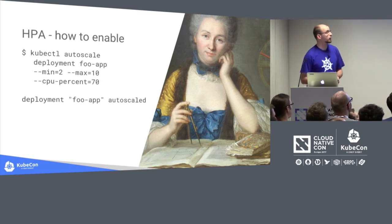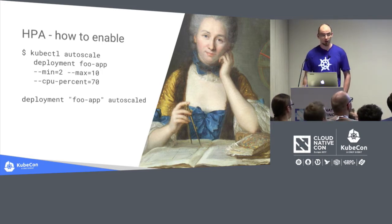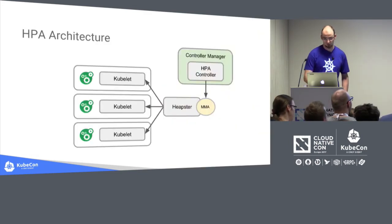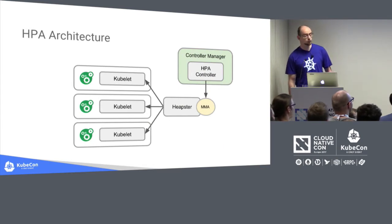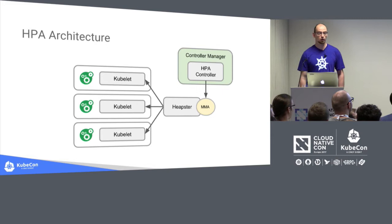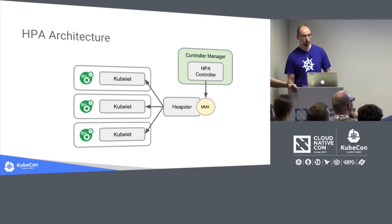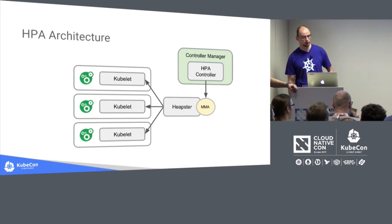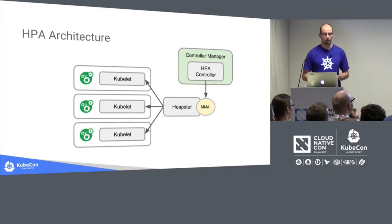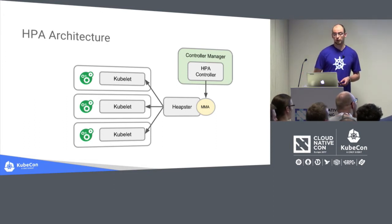Turning it on is simple — a single kubectl command where you specify the minimum and maximum size of your deployment and the target CPU utilization, and your deployment is auto-scaled. Under the hood, pods run on nodes where an agent called kubelet collects basic metrics like CPU and memory usage. Every minute, Heapster gets these metrics from kubelet, aggregates them, and makes them available for HPA via the master metrics API. The HPA controller periodically checks load and adjusts replica counts — so it is critical that Heapster is up and running.